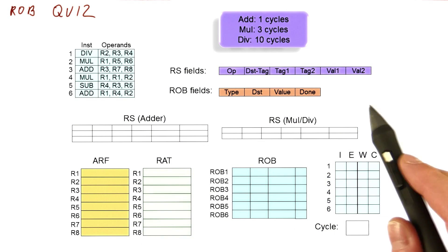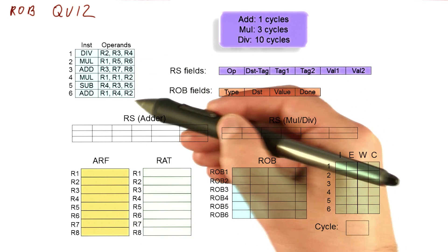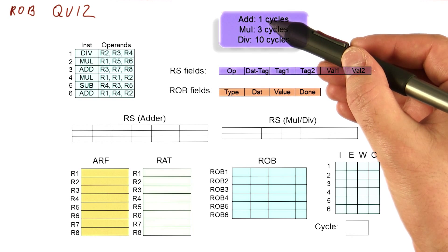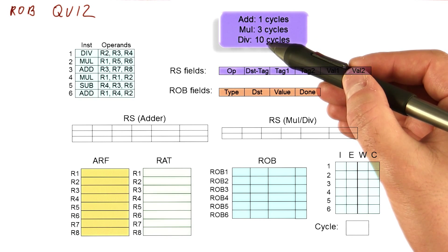We will have this state of the processor with these instructions. Note that the add now takes one cycle, multiplication three cycles, and divide takes ten cycles.